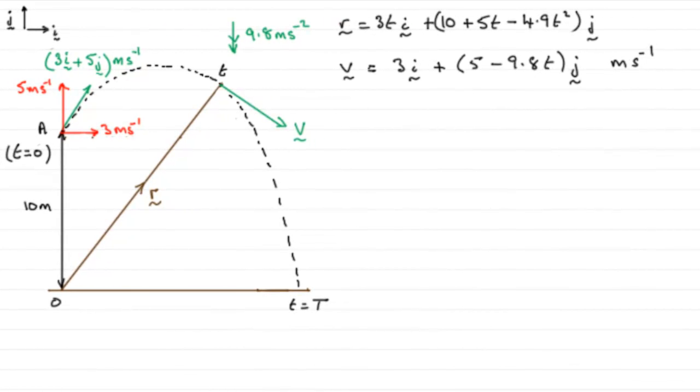Now for this next part, we're told that when P is at a point B on the curve here, that the direction of motion of P is at 45 degrees below the horizontal. And we've got to find the time taken for P to move from A to this point B, wherever it may be.